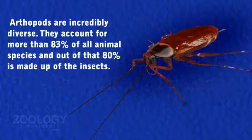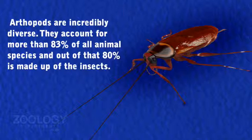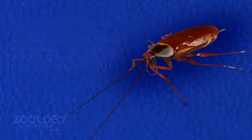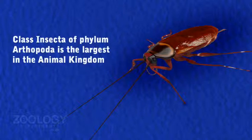Arthropods are extremely diverse — they account for more than 83 percent of all animal species, and out of that, 80 percent is made up of insects. Class Insecta of phylum Arthropoda is the largest in the animal kingdom.